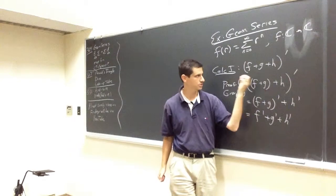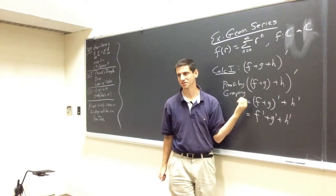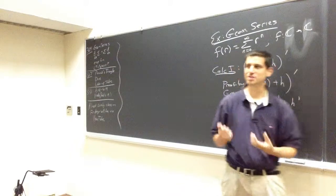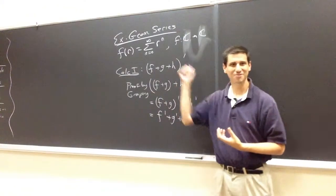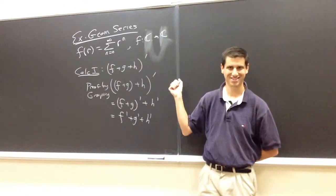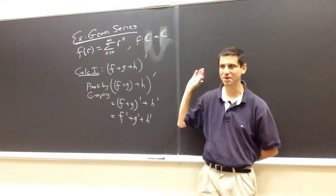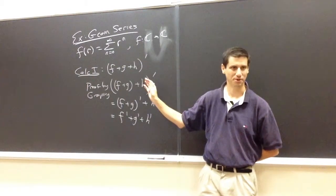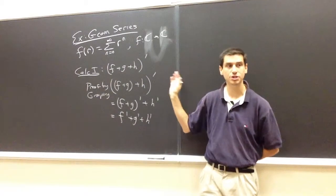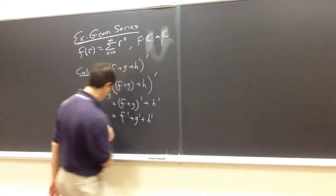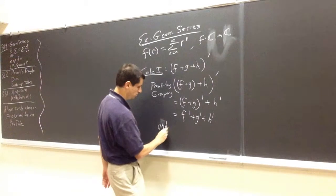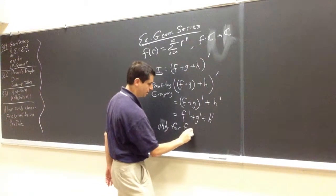So in the range of calc 1, this proves the sum of three terms — its derivative is the sum of the derivatives. If I had four terms, there are lots of ways to do it. You can think about how many ways you can put in parentheses to give different valid proofs. But it's extremely important that this only works for finite sums.